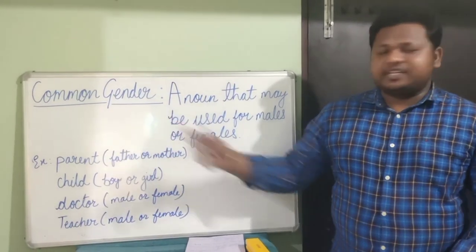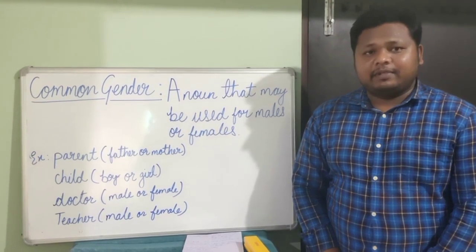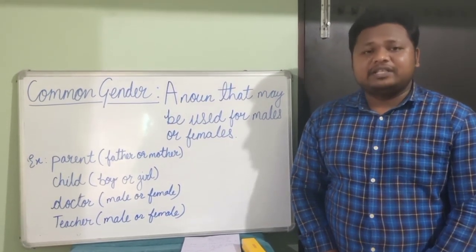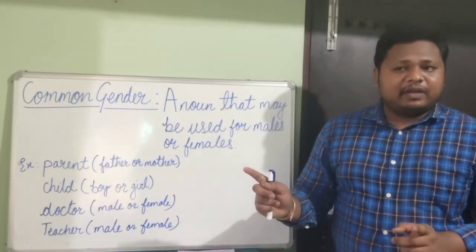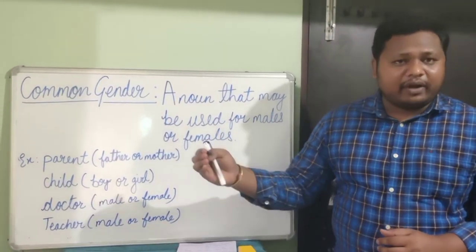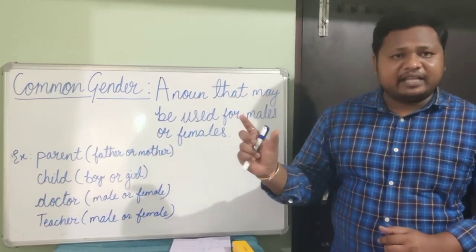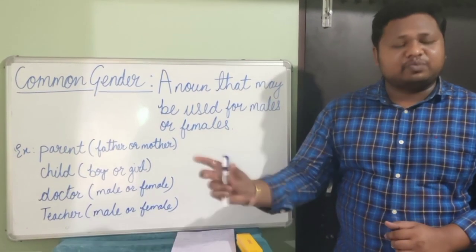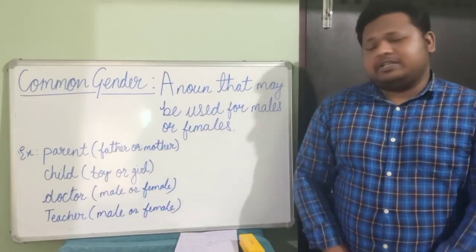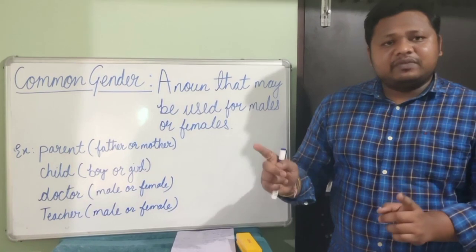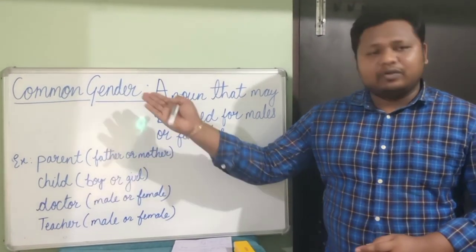Common gender: a noun that may be used for both male or female is called common gender. For example, the word 'friend' — whether it's a girl or a boy, we call them a friend — so 'friend' is a common gender. Similarly, 'parent' is used for both father and mother, so 'parent' is a common gender.